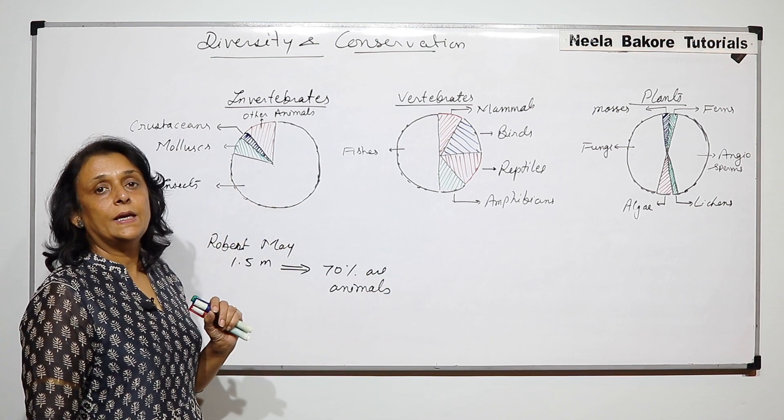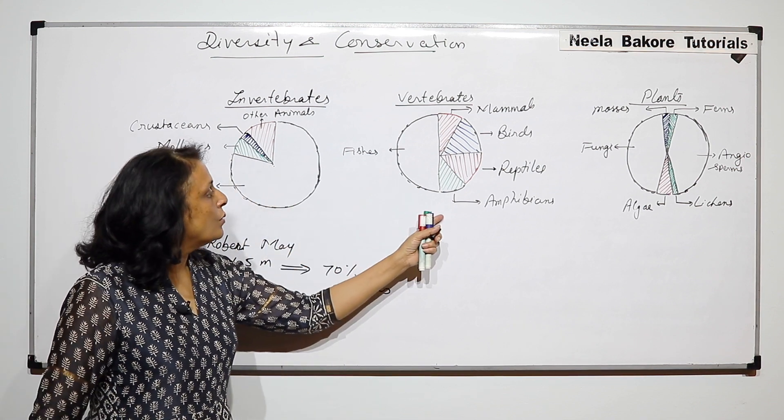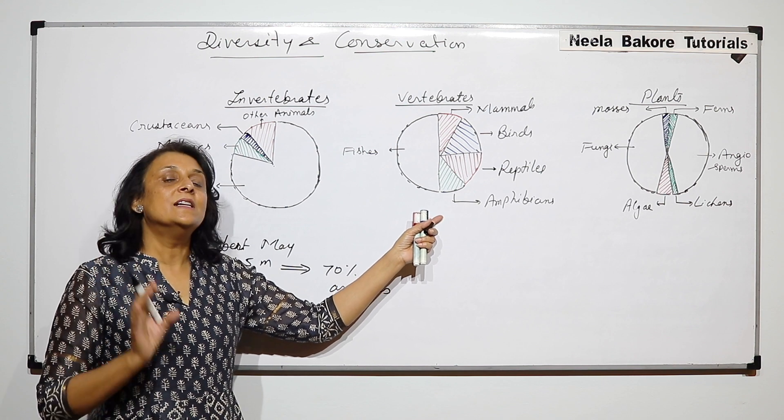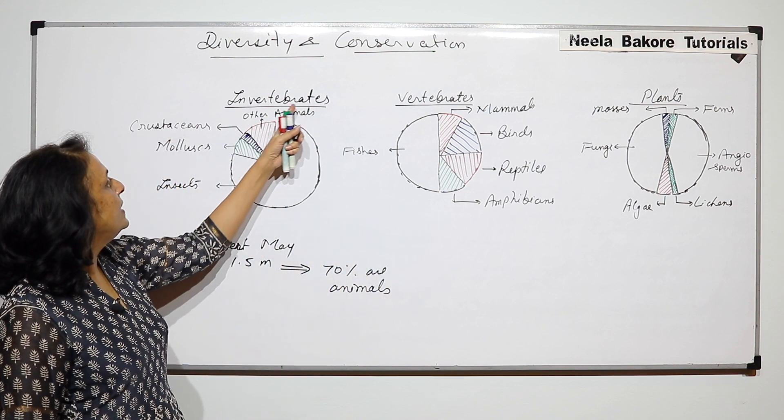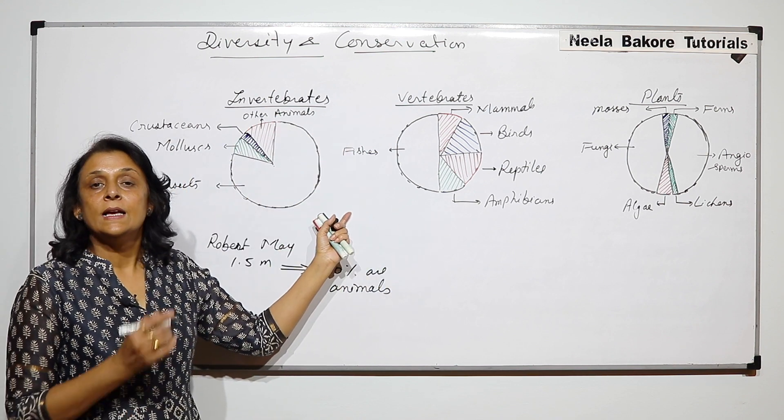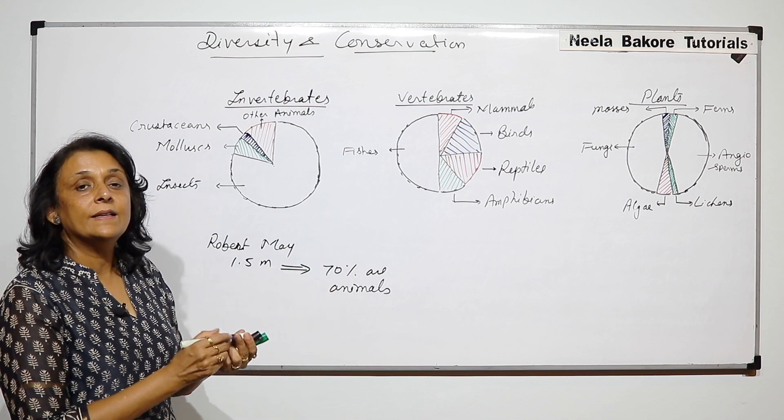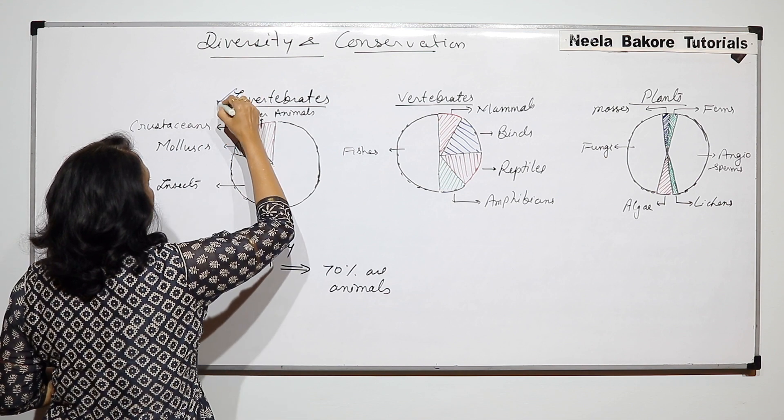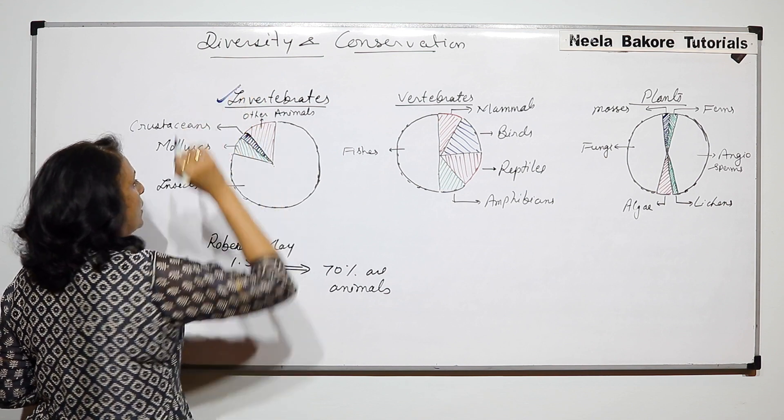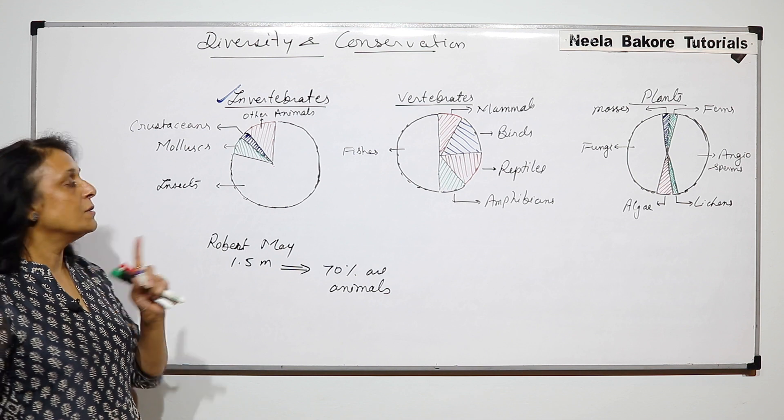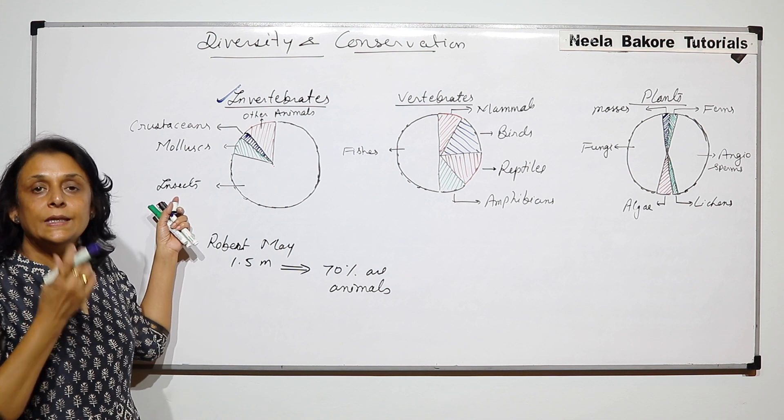If we try to understand the percent distribution, here I have given you the categories. This is the same diagram which is given in our NCERT. To understand this, let us see that amongst invertebrates maximum number is of insects.